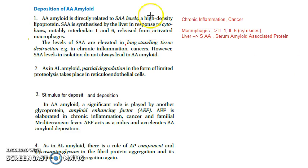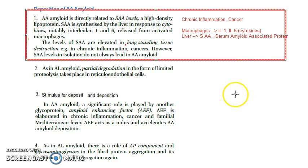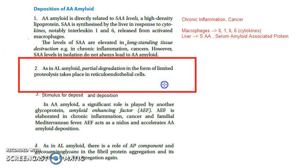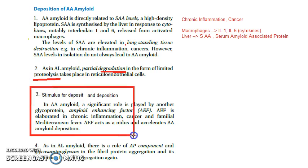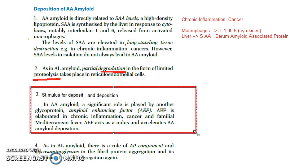Step one for AA amyloid is done. Moving on to step two: there should be partial degradation via proteolysis, carried out by macrophages and reticular endothelial cells. Don't forget the word proteolysis for partial degradation.